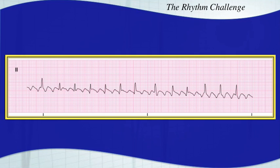Take a good look at the atrial activity here. This is an atrial flutter with variable conduction again. Atrial flutter with variable conduction — your R-to-R intervals are irregular.